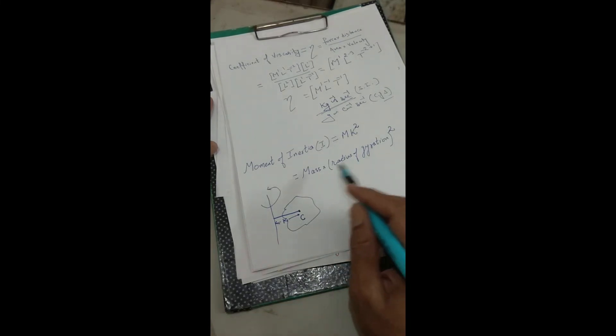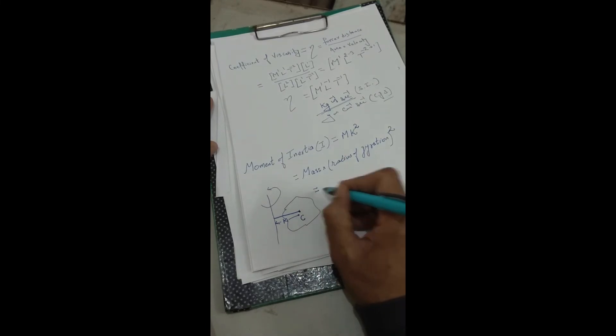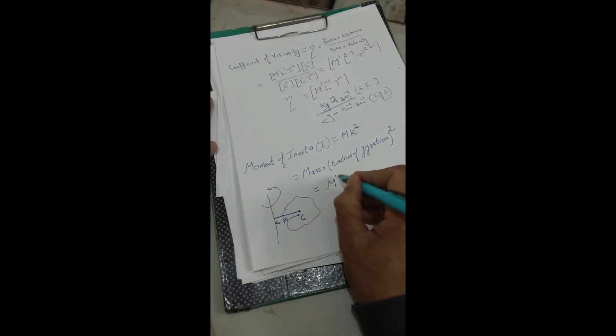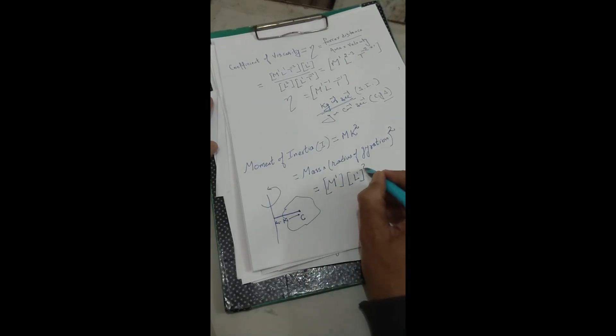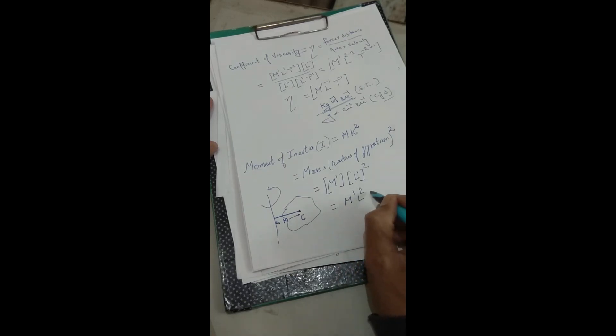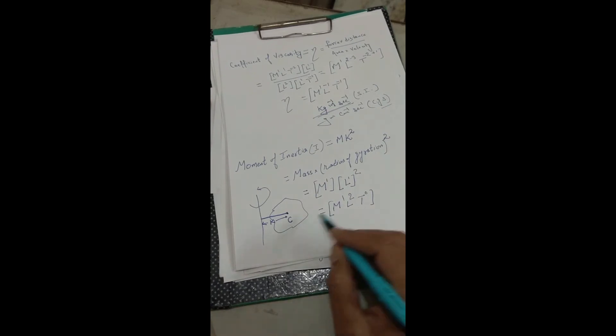We don't need the definition right now — just memorize the dimension formula. For mass, the dimension is M1. The radius of gyration is essentially a distance (length), and we square it, so it contributes L2. Therefore, the dimension formula for moment of inertia is M1 L2 T0.